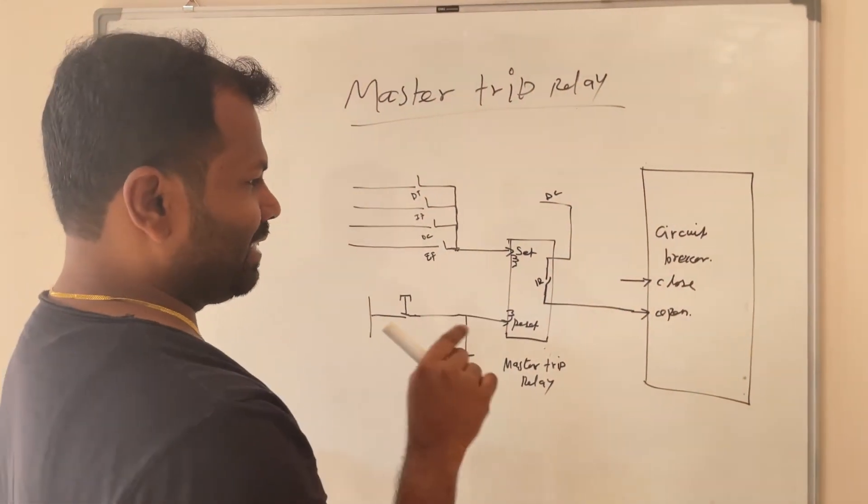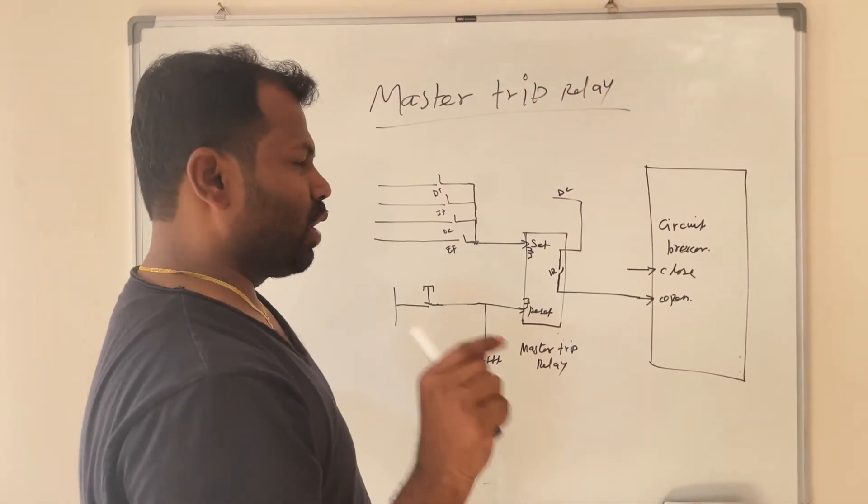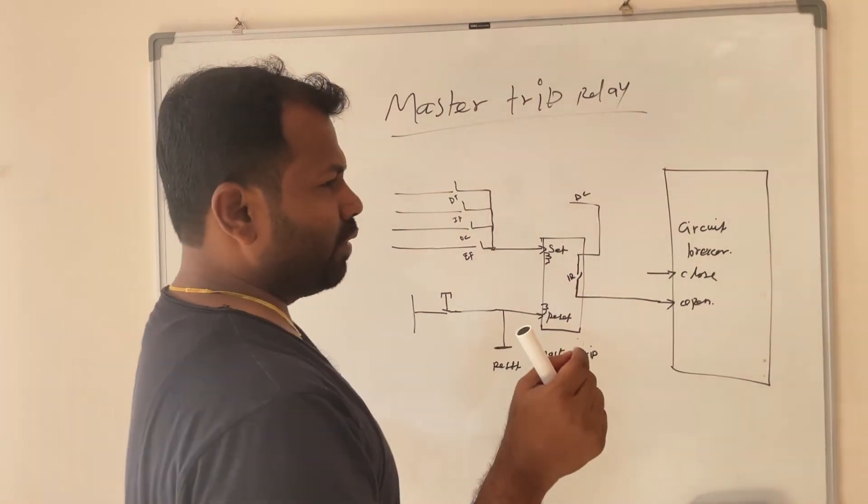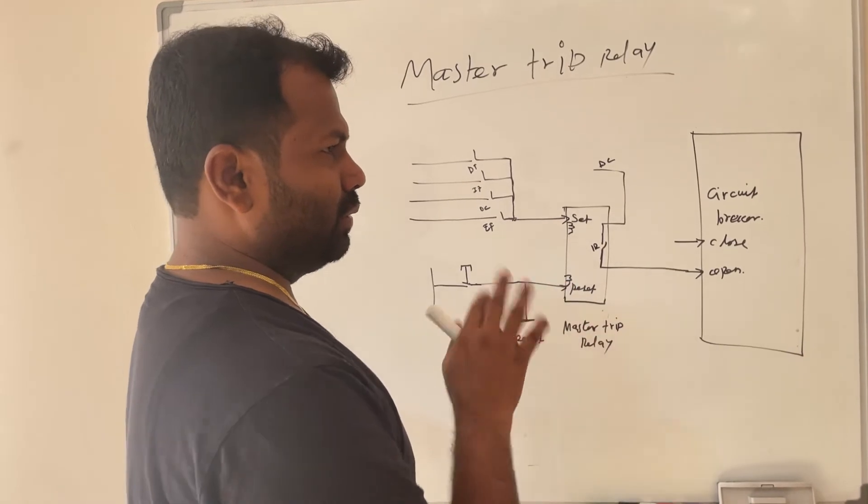This master trip relay will have multiple NO contacts. One NO contact will be used to trip the breaker, other NO contacts will be used to take feedback of this master trip relay.